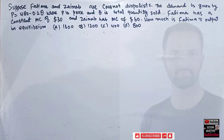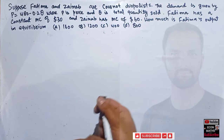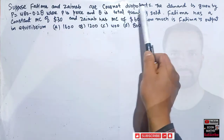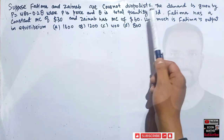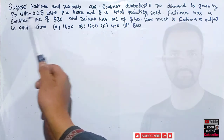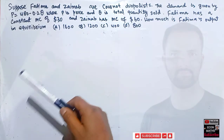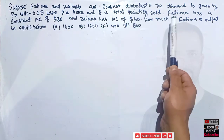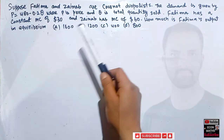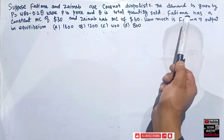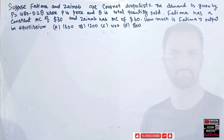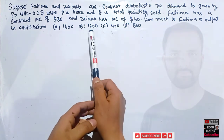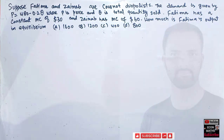In this video we will try to solve another problem on the Cournot duopoly model. The question was asked on the Econ Maths Telegram channel. Suppose Fatima and Zeynab are Cournot duopolists. The market demand is given by an inverse demand function where P is price and Q is total quantity sold. Fatima has a constant marginal cost of $30 and Zeynab has a marginal cost of $60. How much is Fatima's output in equilibrium? The options are 1600, 1200, 400, and 800.